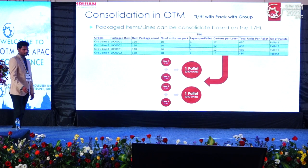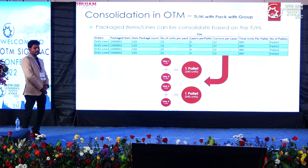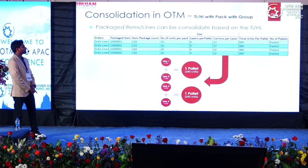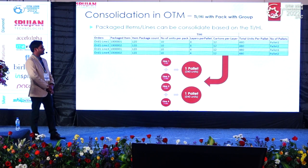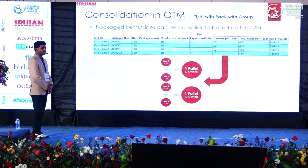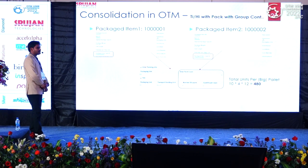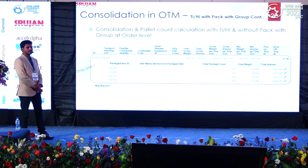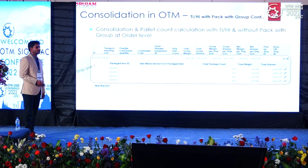This slide shows order details and tie-high — the same as the previous scenario. The green-highlighted lines share one package item and blue-highlighted lines share another package item, but all four lines have the same tie-high. The business requirement is that only lines with the same package item should consolidate into one pallet. So the result should be two different pallets: Lines 1 and 3 in one pallet, and Lines 2 and 4 in another. Without pack-with-group, all lines consolidate into one pallet due to the matching tie-high. After applying pack-with-group, we achieve the two-pallet result.